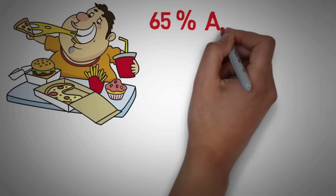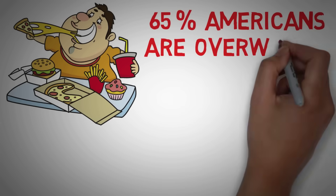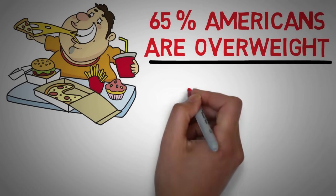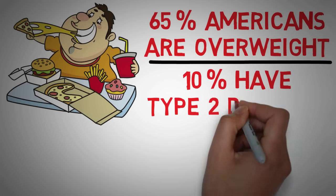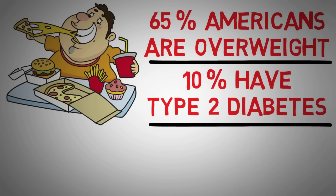65% of America's adults are overweight or obese, and 10% of the population has type 2 diabetes, a preventable disease that stems from inactivity and poor nutrition. We're literally killing ourselves, and it's a problem throughout the developed world.